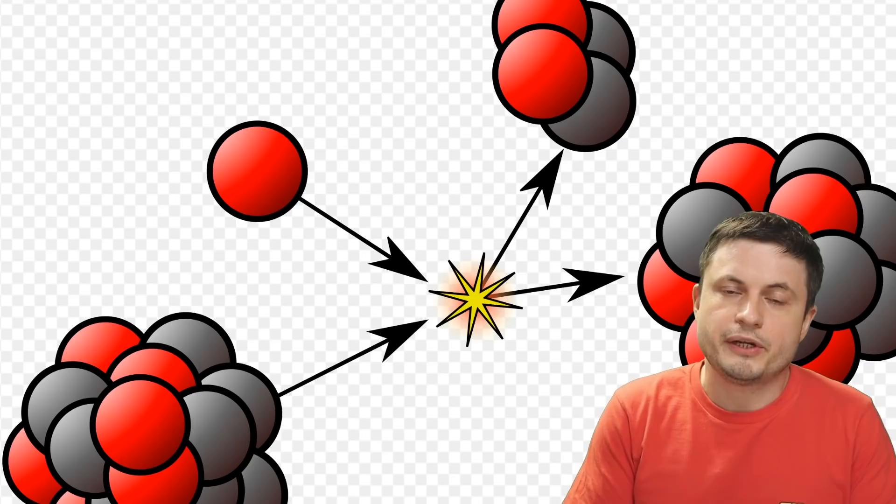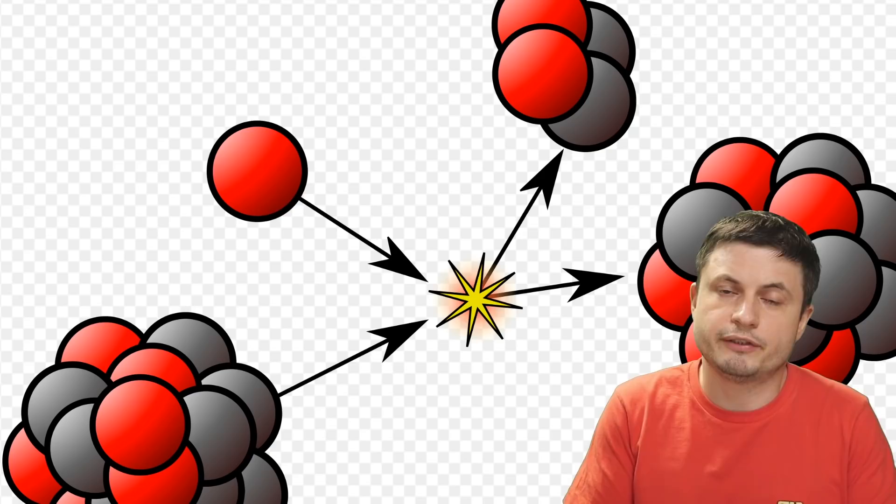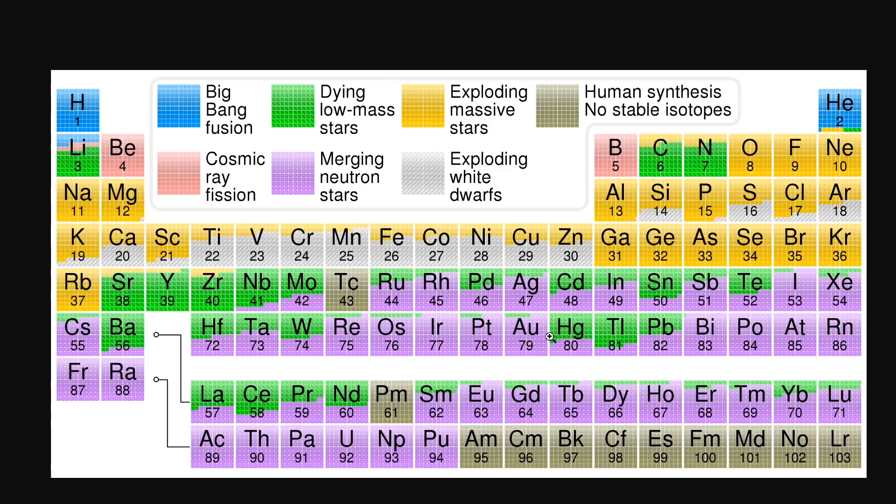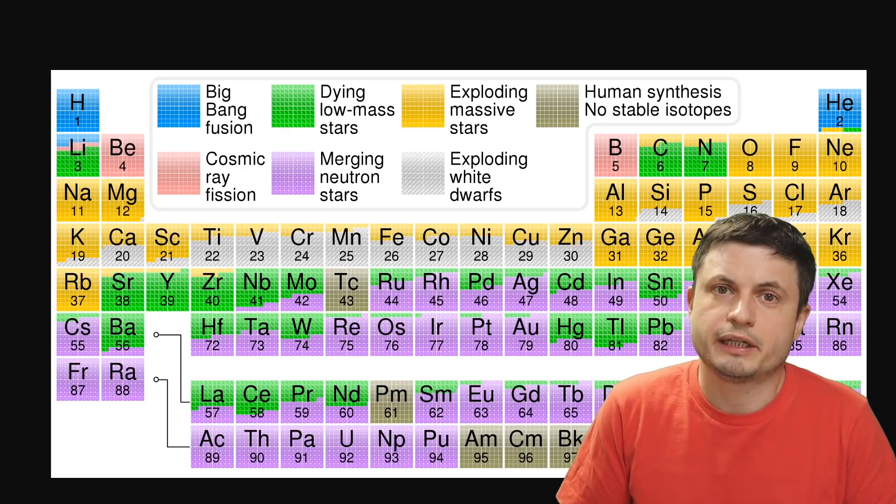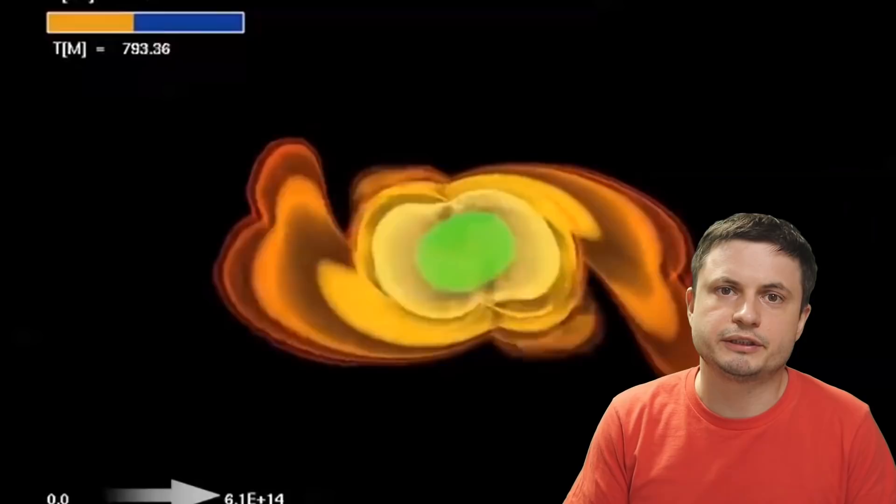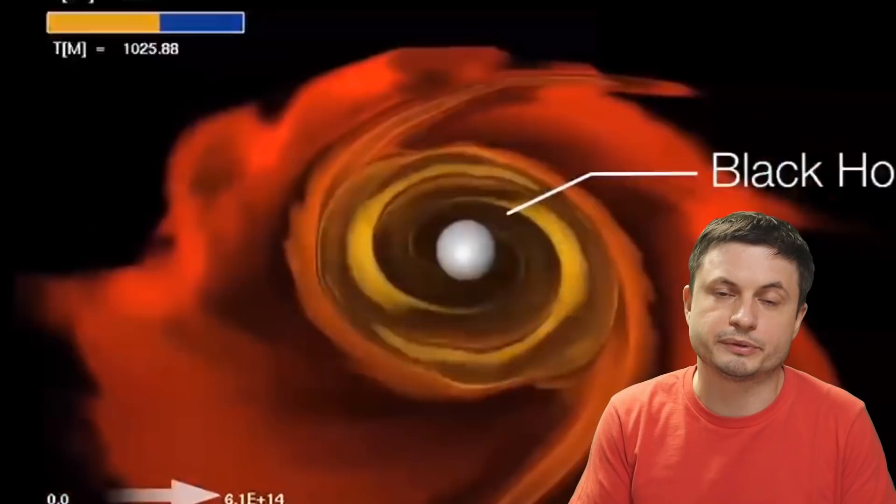It's produced during the so-called R process, where R stands for rapid. It's essentially an extremely energetic event, usually occurring when neutron stars collide, that suddenly bombards various elements with a lot of neutrons, which essentially results in the production of different heavy elements. In this periodic table you can see that a lot of elements, especially the ones in violet, are essentially produced only during the merging neutron star events. The neutron star collision and the resulting explosion from these collisions is essentially how we believe a lot of the uranium and thorium on planet Earth came to be.